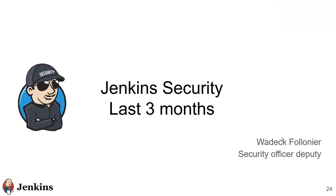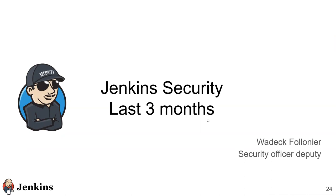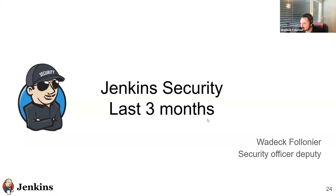I'm talking here instead of Daniel Beck. Daniel is just taking some PTO for having a longer weekend. In terms of number of advisories since the beginning of the project, it's 124. Not everything from Daniel alone — we were a team recently with security. At the beginning it was mainly Koshuke doing it. In the last three months, we published 10 advisories with a total of 46 vulnerabilities. The number is growing, so we need to keep the pace.